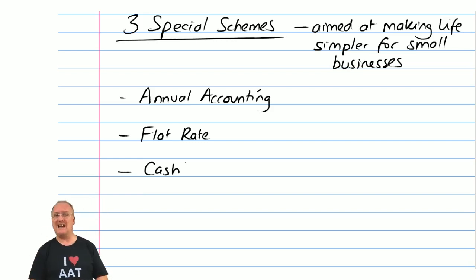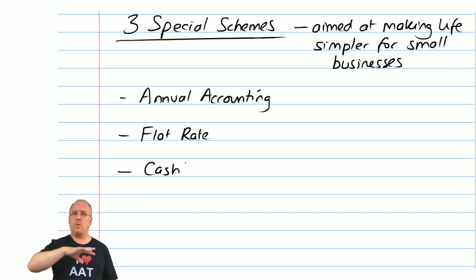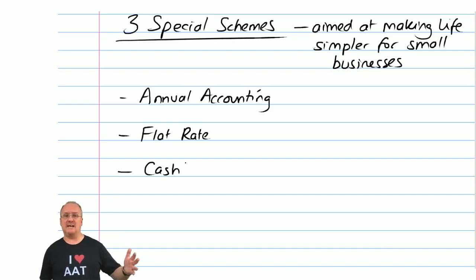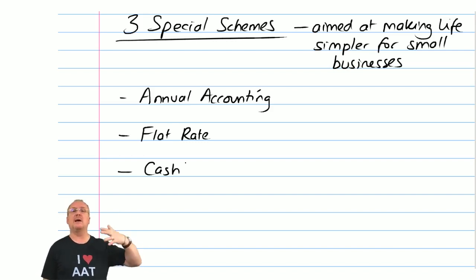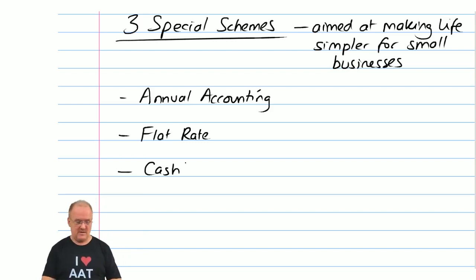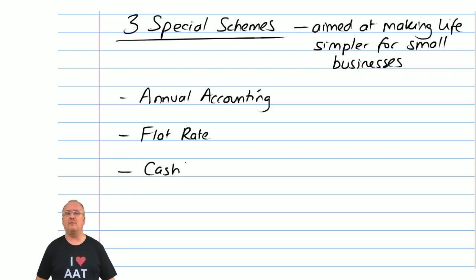The third one, the cash scheme, gets around a cash flow problem. Typically you're required to deal with the VAT when you invoice your customers — but what if they don't pay you for a while? Under the cash scheme you're only liable to pay the VAT once your customer has actually paid you, which from a cash flow perspective is a lot nicer. So those are the three schemes — a little helpful memory jogger before we see them again in later weeks.